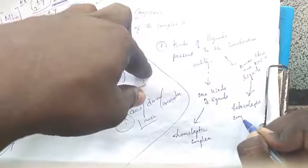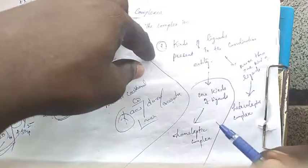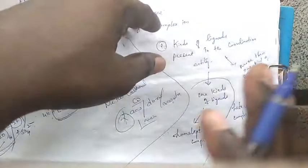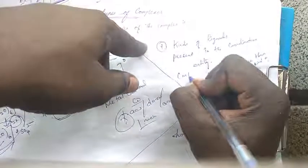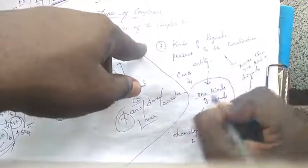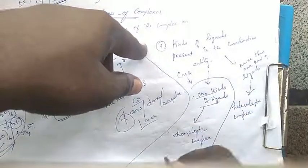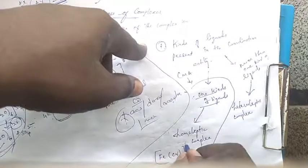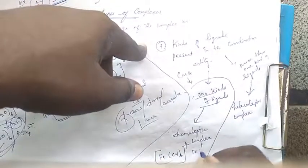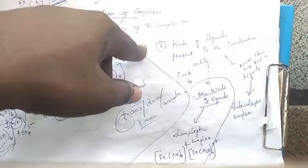Homoleptic complex: the central metal atom is coordinated to only one kind of ligand. Example: [Fe(CN)6]4− — iron is the central metal atom coordinated only to CN ligands. Another example: [Fe(H2O)6]2+ — iron coordinated only to H2O ligands. Both are homoleptic complexes.